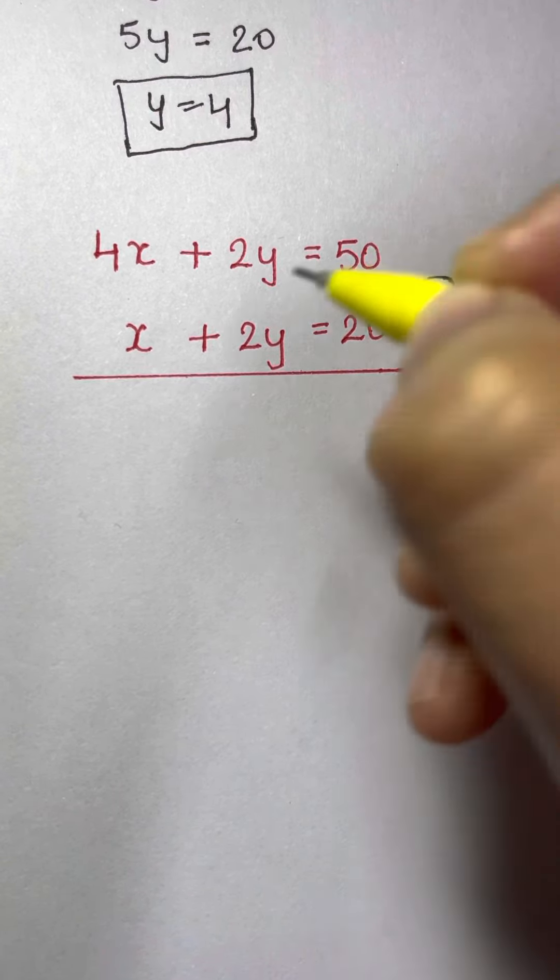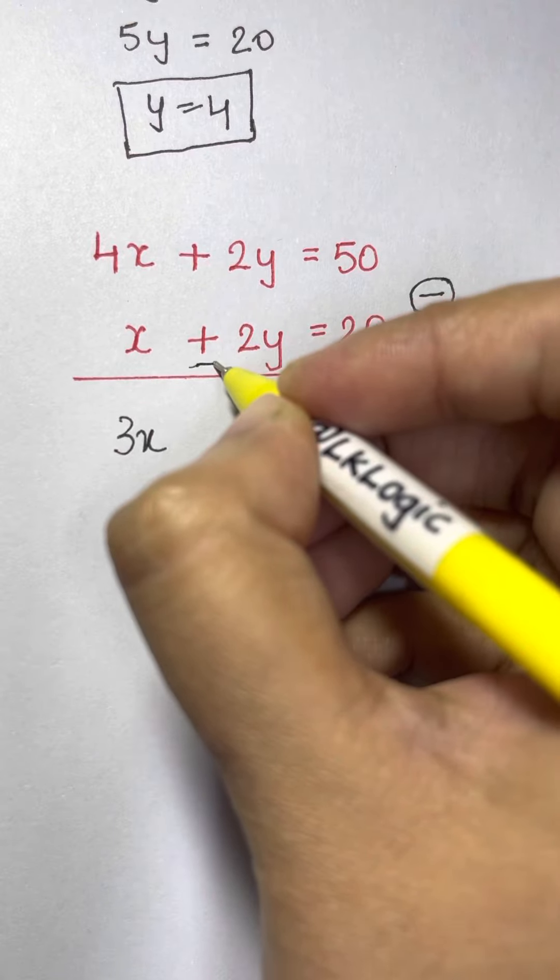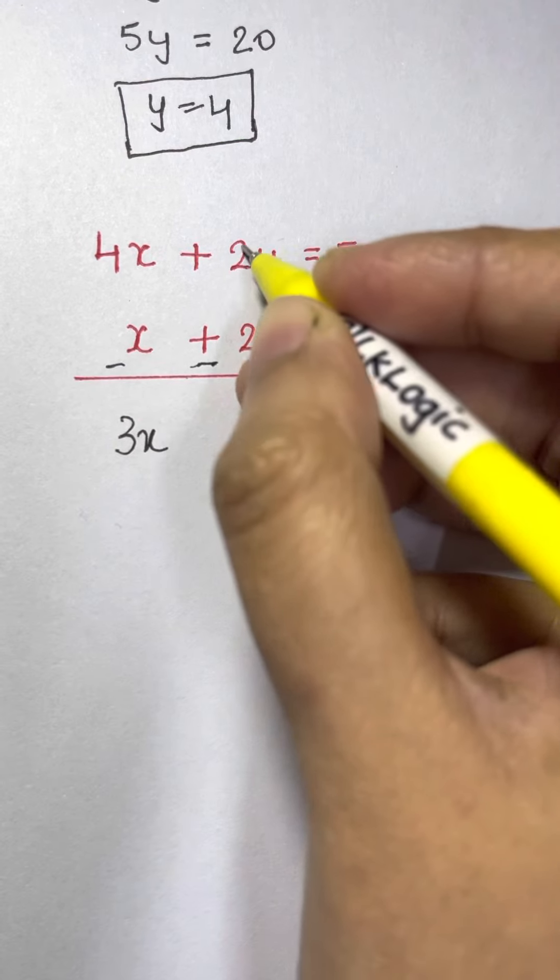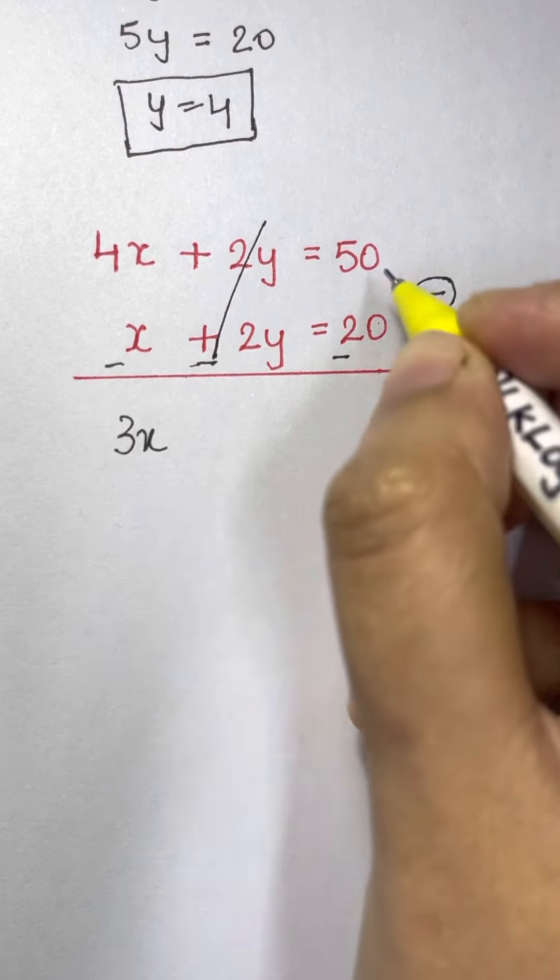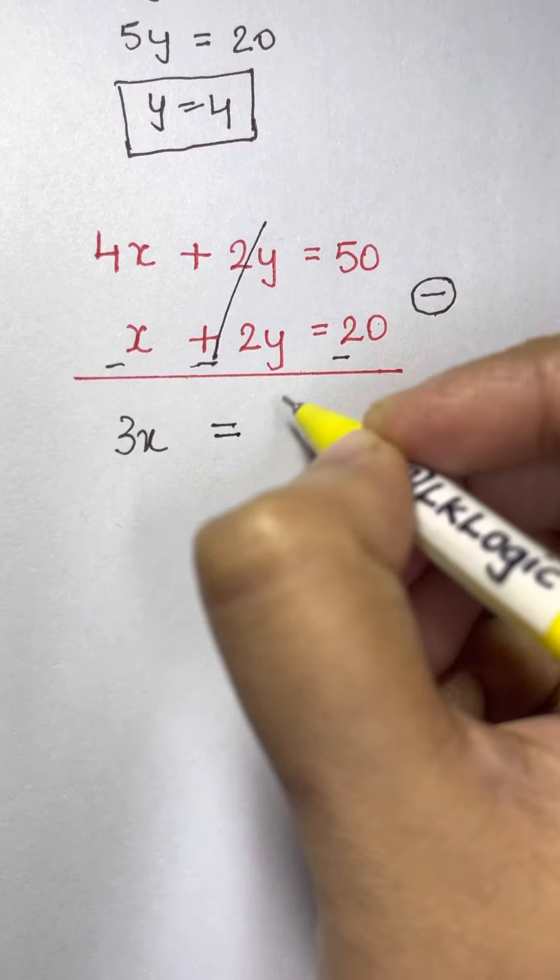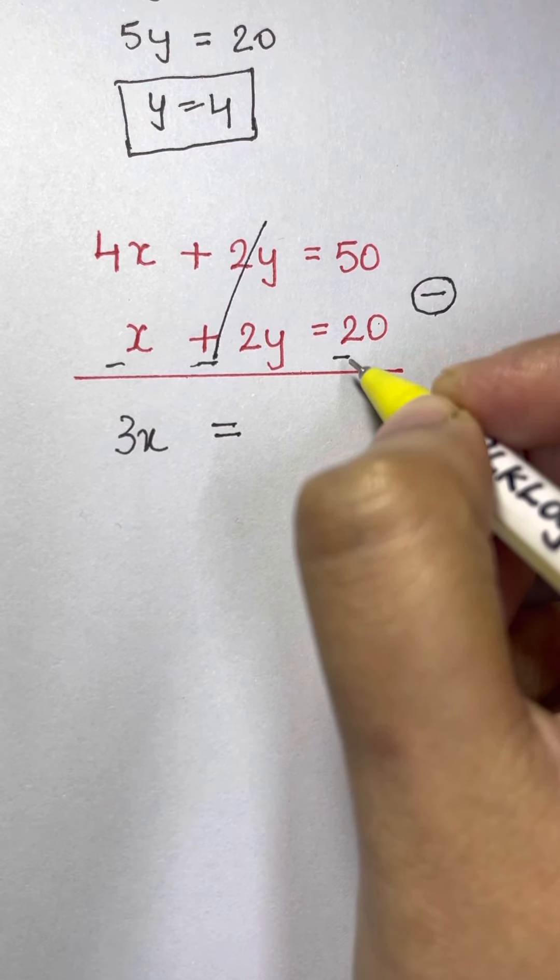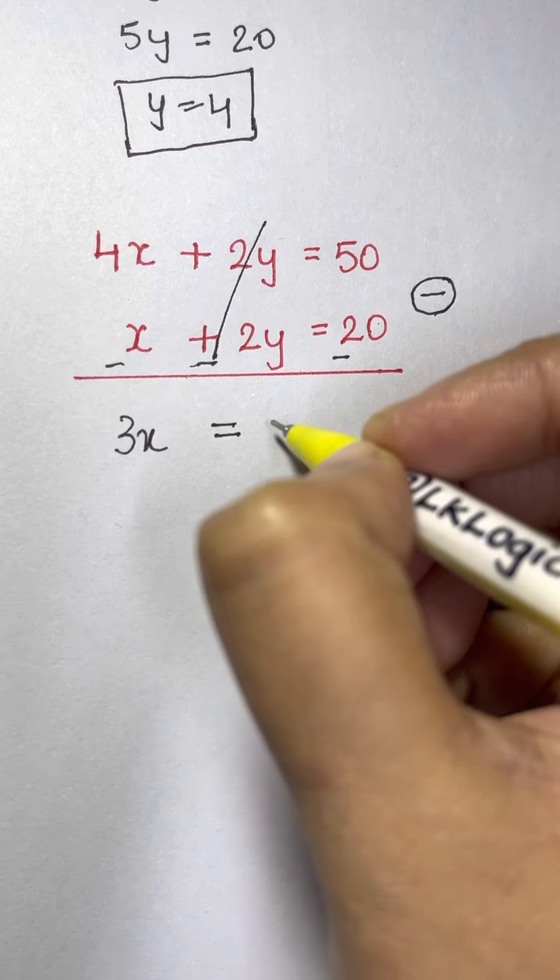So now when you're going to subtract, like 4x minus x will give you 3x. 2y minus 2y becomes minus. Change the signs. Minus 2y, it's cancelled. So you have 3x equals to 50 minus 20. That's equal to 30.